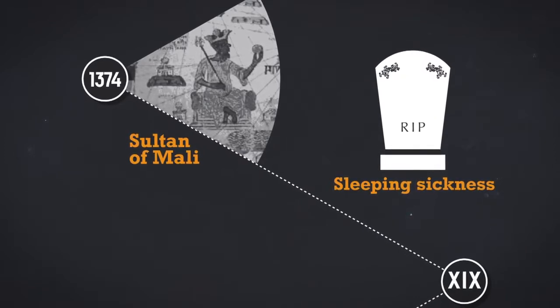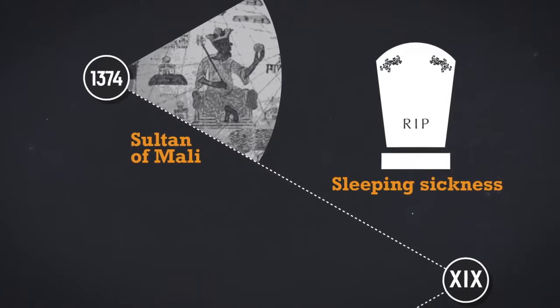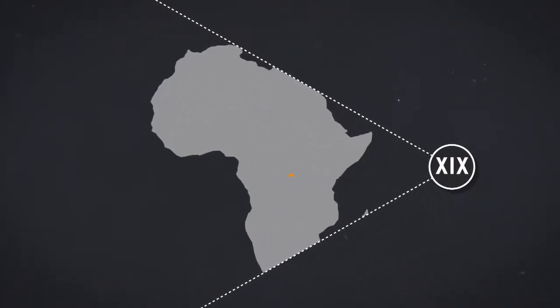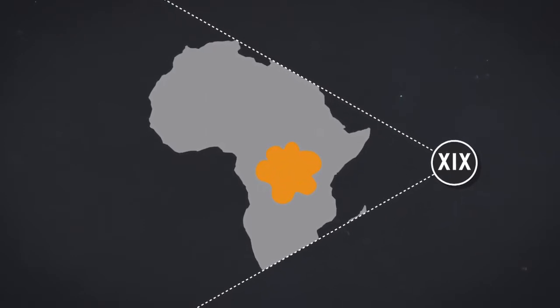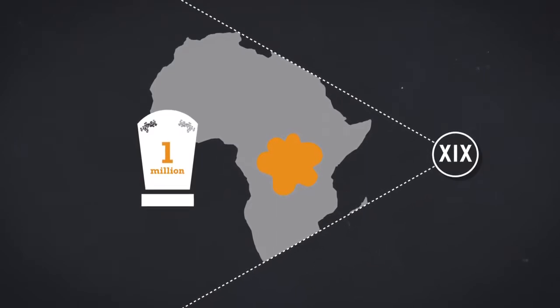Between the 14th and 19th centuries, sleeping sickness became increasingly common. At the end of the 19th century, the first major epidemic struck Uganda and the Congo Basin. Historians believe one million people died.